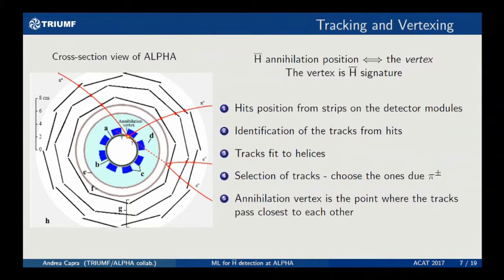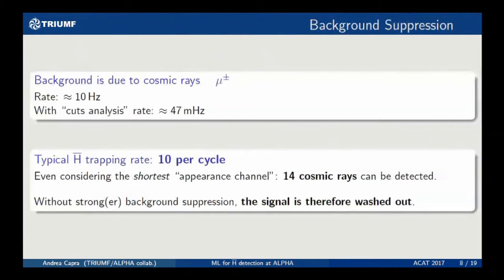This is our five-point pipeline for vertex reconstruction. The vertex — where the anti-hydrogen annihilates — is really the anti-hydrogen signature. From the detector, we identify tracks with some selection conditions on the hit indices, then we select tracks that look more like charged pions, and then we find the point where the pion tracks converge — and that's our vertex.